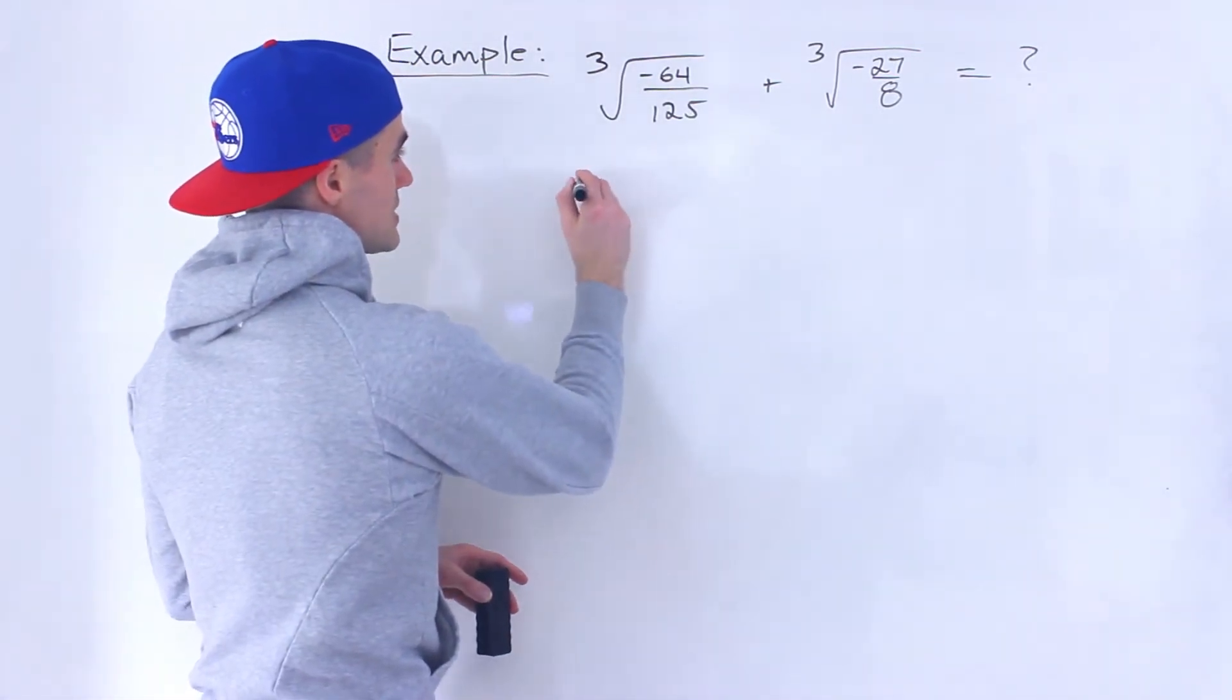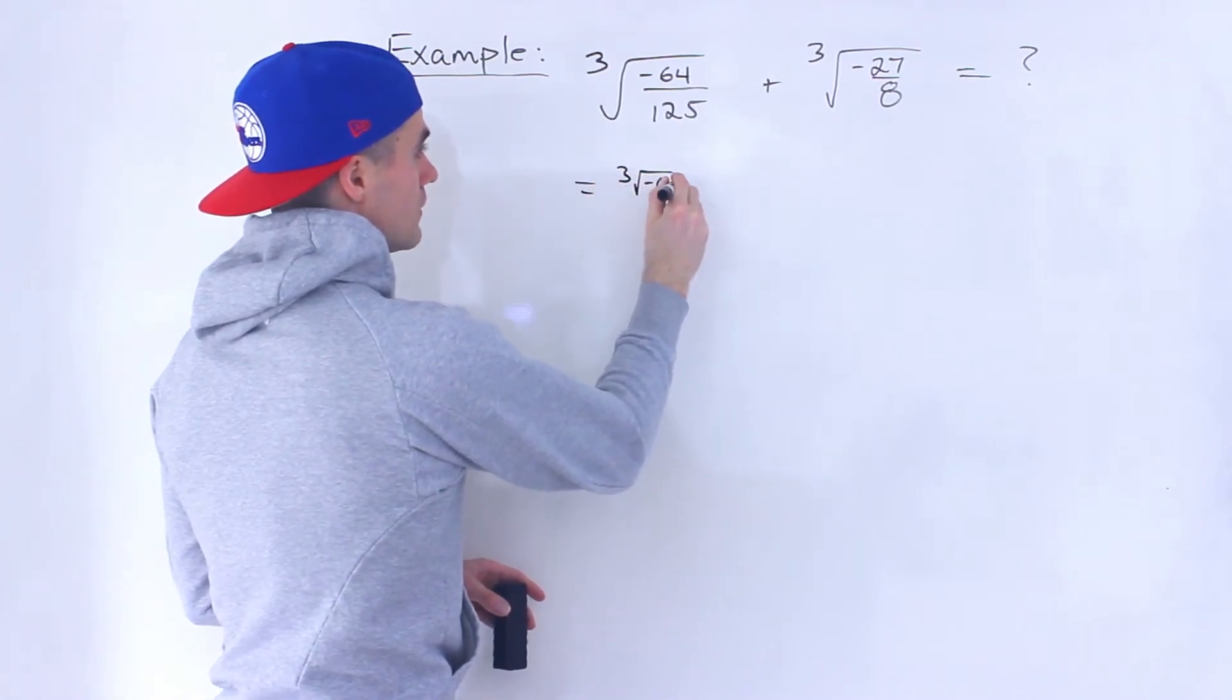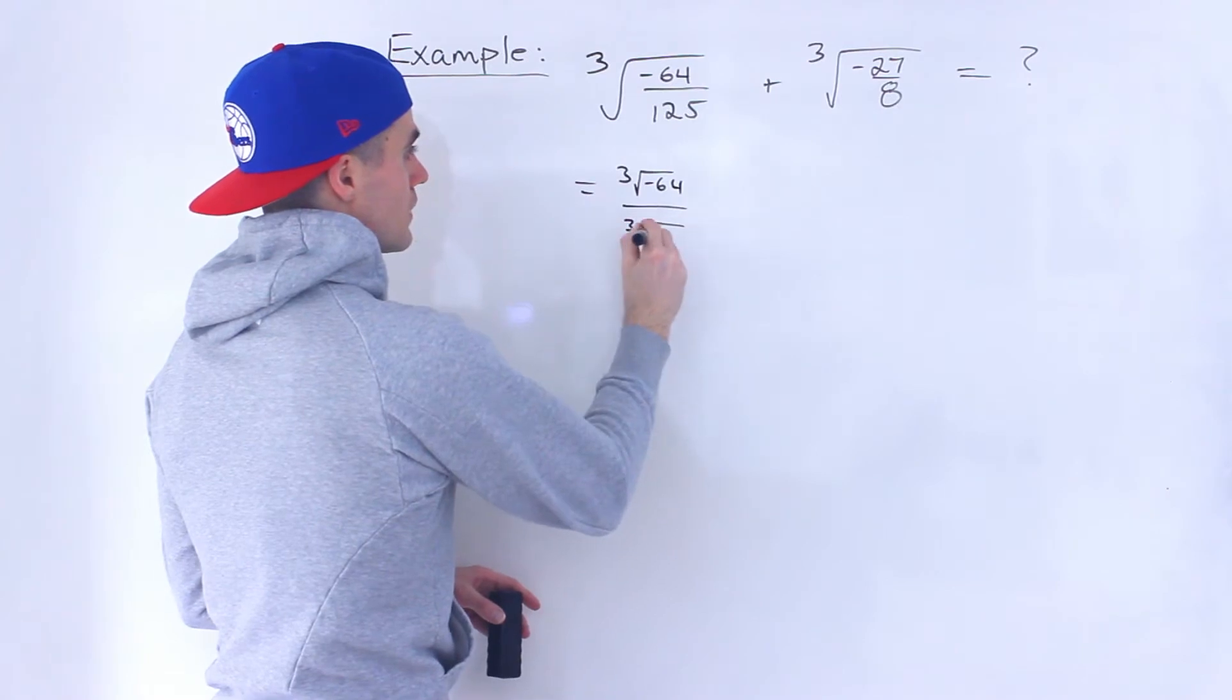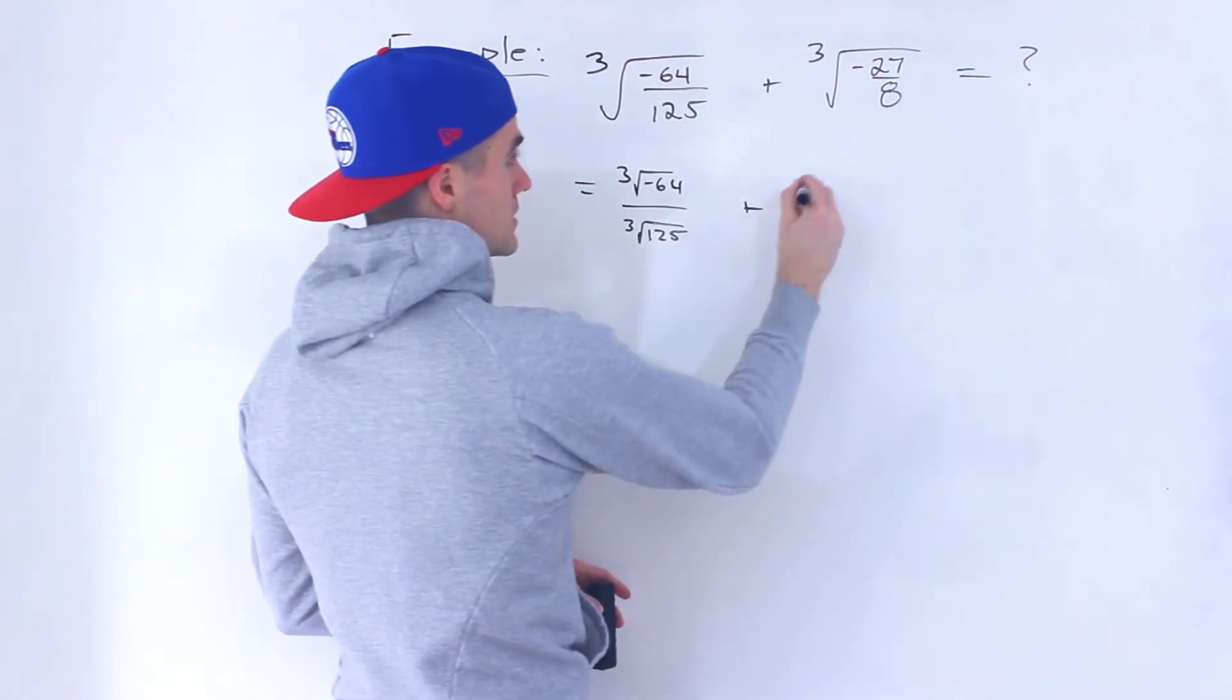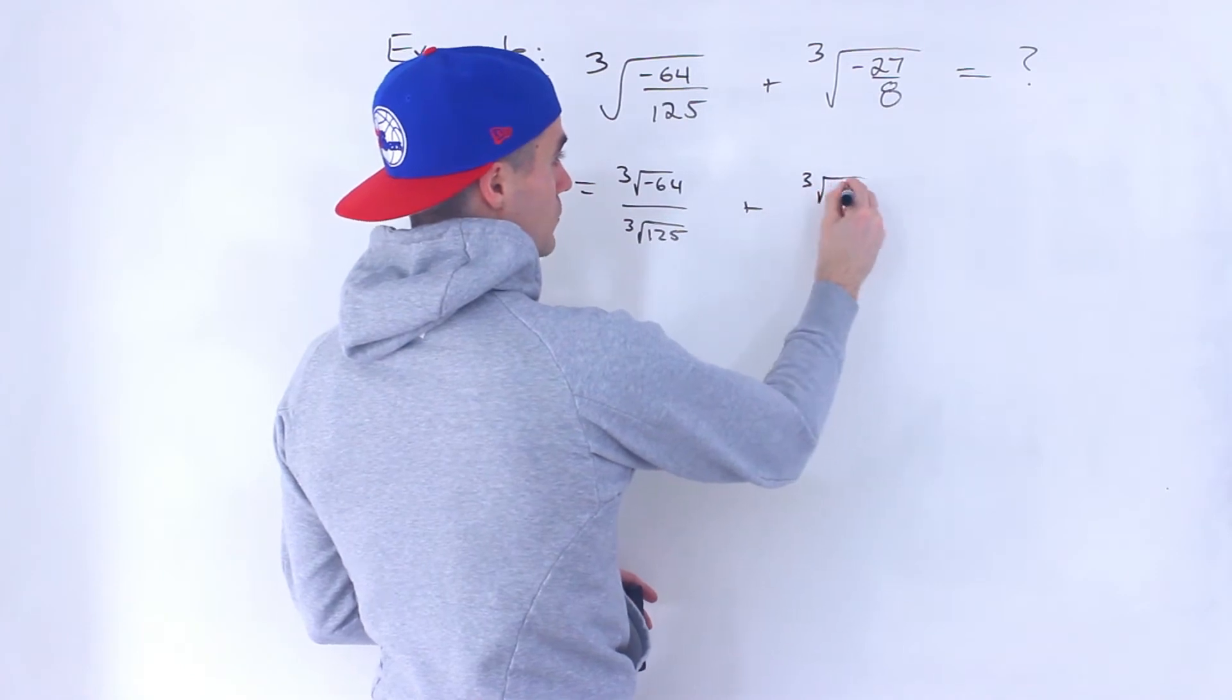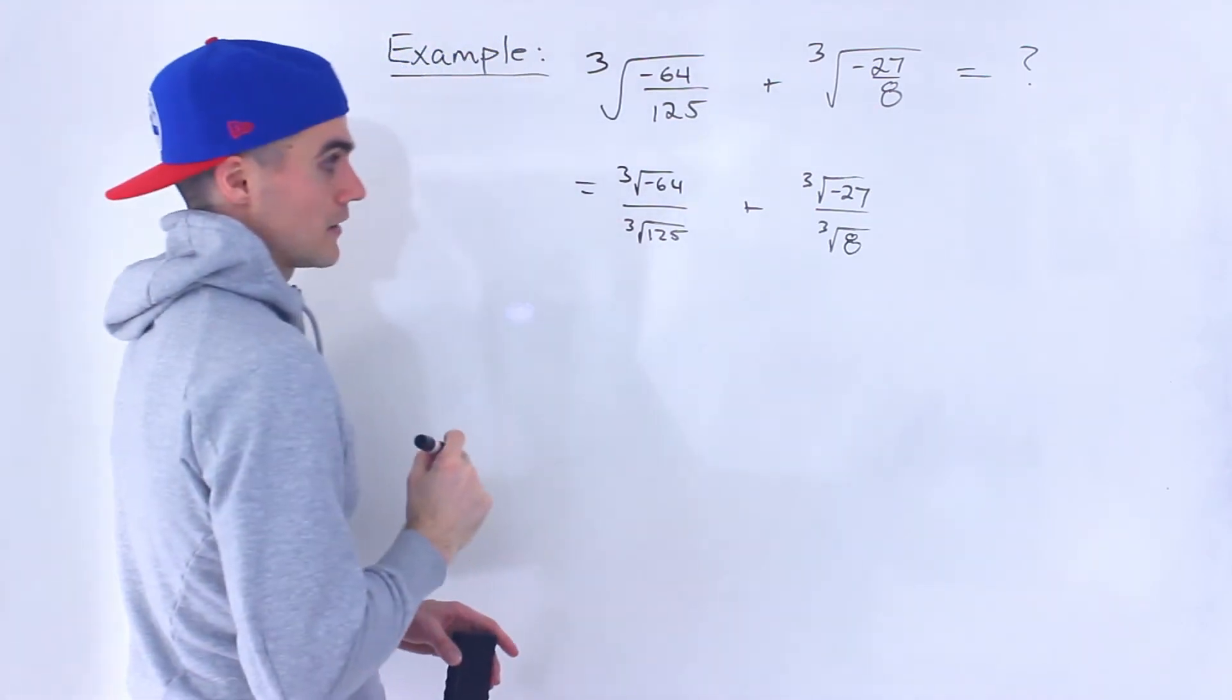So notice that what we can do is actually take the third root of the numerator over the third root of the denominator, like that, plus the third root of the numerator over the third root of the denominator.